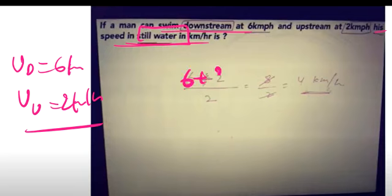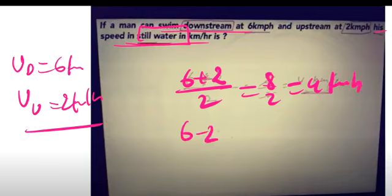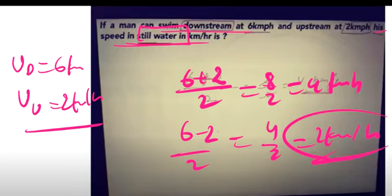So if his speed will be more, then it will be plus: 6 plus 2 divided by 2 is 4. If the speed of the stream comes, then it will be minus: 6 minus 2 divided by 2 means 2 km/h. Speed in still water - the speed will be plus because if the speed of boat and man is more.